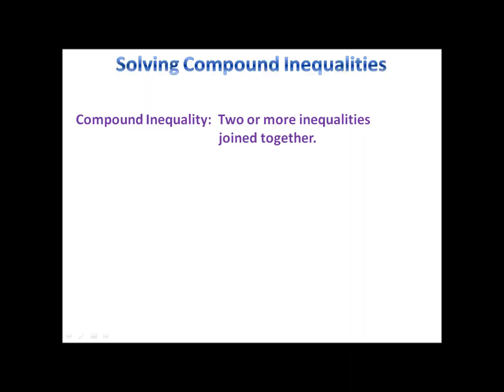In this lesson we're going to take a look at how to solve compound inequalities. Compound inequalities are simply when you have two or more inequalities that are attached or joined together. We attach and join them together with one of two words. The first word is OR, which represents a union where we take both inequalities and combine them together. AND represents an intersection where we look at the inequalities and find the values that they have in common.